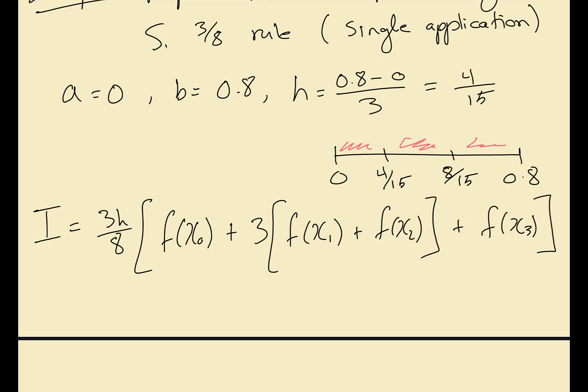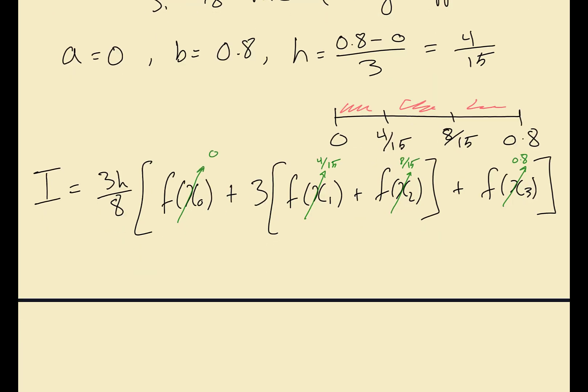Here, straight from this bar system that we drew, x naught is 0, x1 is 4 over 15, and then x2 is 8 over 15, and the last point here is 0.8. So again we use that same equation that we showed last class. We plug in h which is 4 over 15.